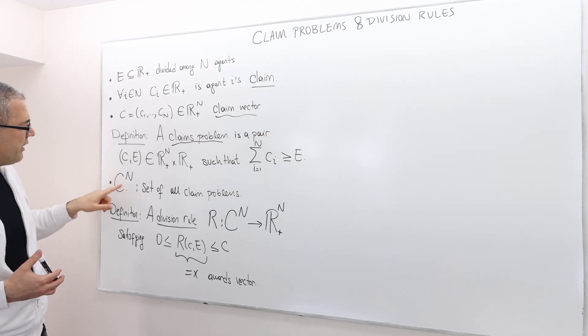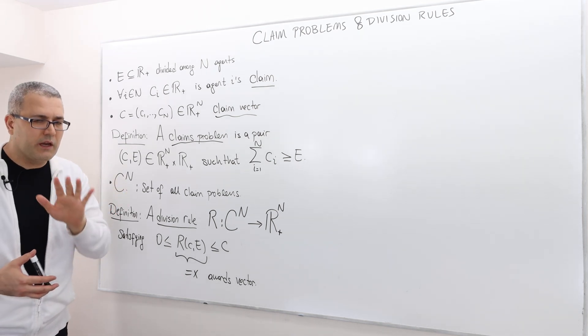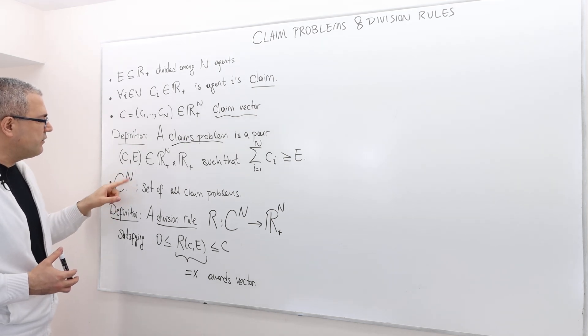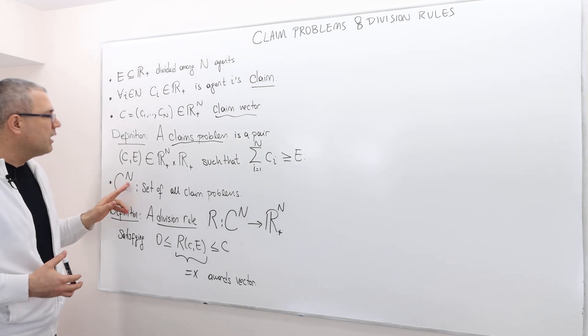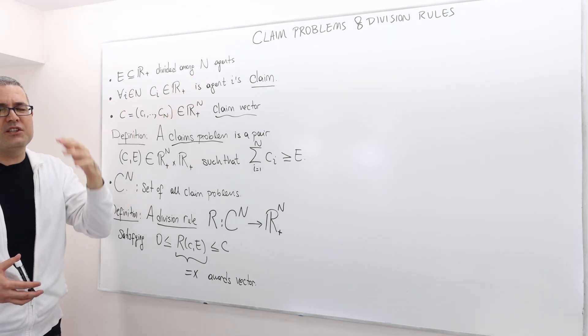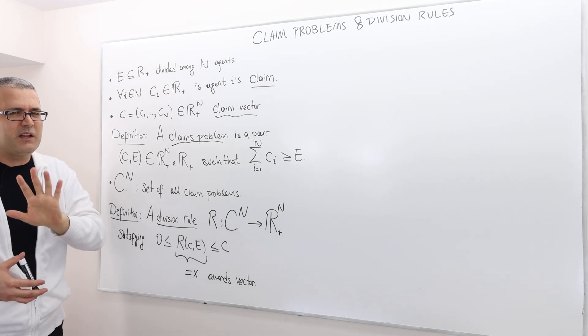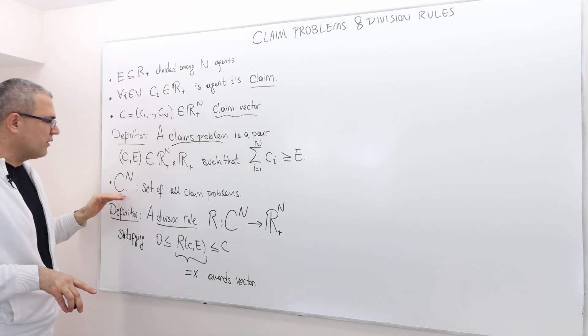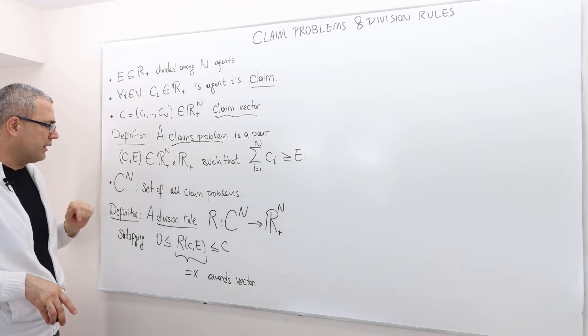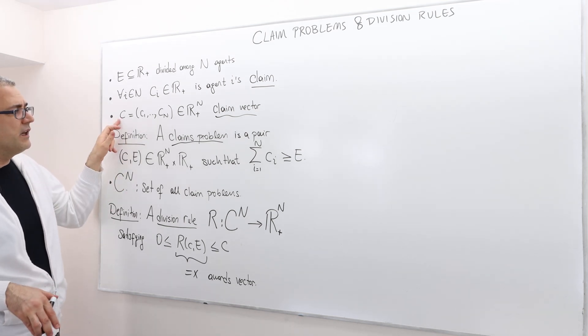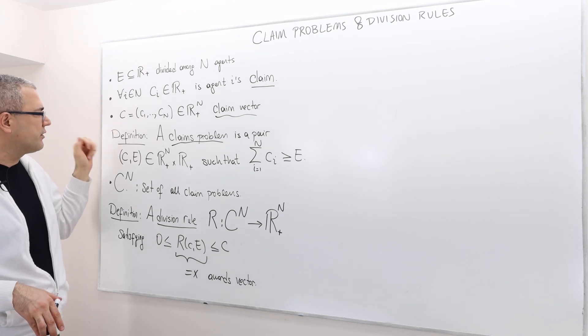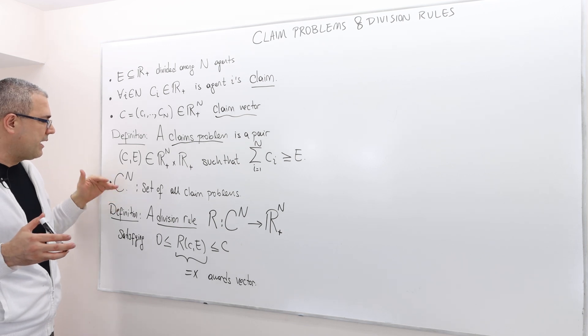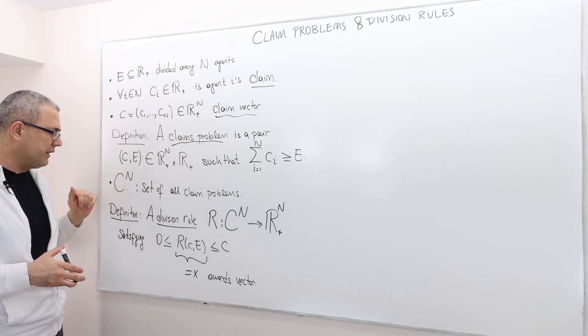Well okay, so when we, sorry, I'm going to take back one thing. It's like when we use this C to the power N, I'm sorry, we do not change the set of agents, the number of agents, we keep it the same. So we do not vary the number of agents. So for that reason, we have to the power N. Okay, sorry. But everything else, meaning change the claim vector, change the surplus, you create a new claims problem, and then it's going to be included in this set.